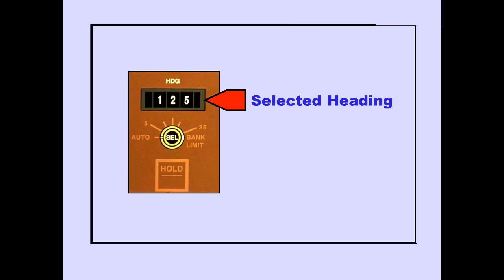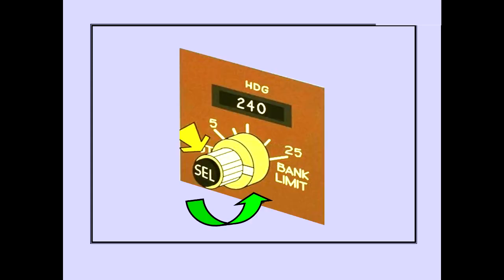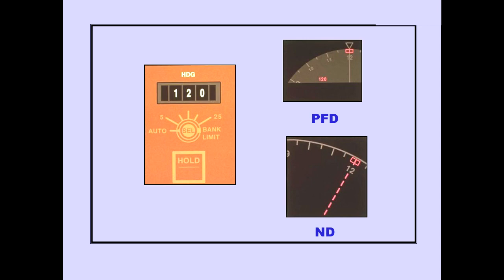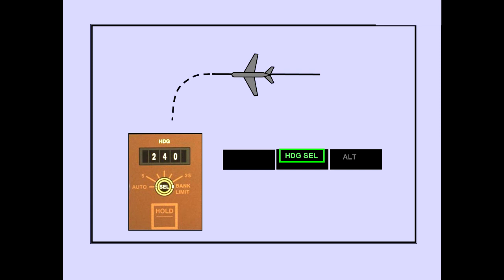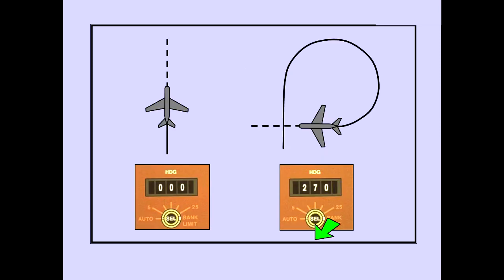Now let's discuss the Heading Select mode. The Heading Select mode is used to turn the airplane to a selected heading. Rotating the Heading Selector sets the desired heading values into the heading window. The selected heading is also displayed in magenta on the PFD and ND. Pushing the Heading Select switch selects the mode, and Heading Select appears in the flight mode displays. The autopilot commands a turn to the selected heading in the nearest direction. When in Heading Select mode, selecting a new heading commands the autopilot to turn in the same direction which the heading selector was turned, even when the heading change exceeds 180 degrees.